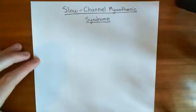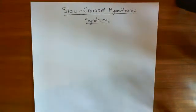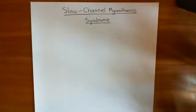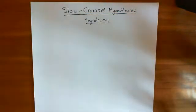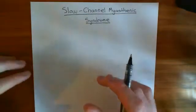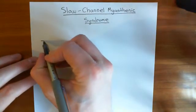Slow channel myasthenic syndrome is a disease involving the nicotinic acetylcholine receptors — specifically the nicotinic acetylcholine receptors which are on the skeletal muscle cells. We're going to start off with a revision of the structure of the neuromuscular junction and of the neuromuscular junction nicotinic acetylcholine receptor. Then we're going to discuss what happens in slow channel myasthenic syndrome and how that leads to muscle weakness.